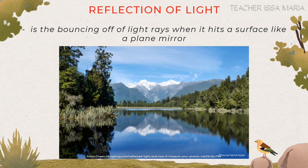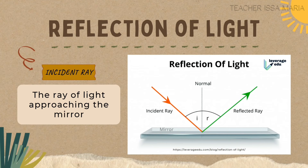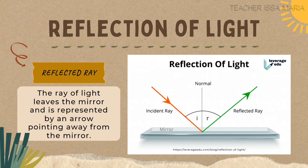When we say reflection of light, this is the bouncing off of light rays when it hits a surface like a plane mirror. Reflection of light is the bouncing back of light. We have here the incident ray — the ray of light approaching the mirror. That is the incident ray, the ray that hits our mirror. Next is the reflected ray — the ray of light that leaves the mirror, represented by an arrow pointing away from the mirror.